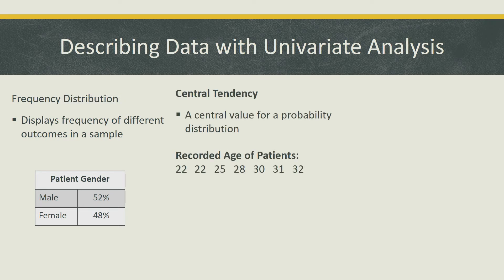Central tendency focuses on a central value for a probability distribution. Here, we see a dataset consisting of different patients and their ages. One way to determine this is to find the mean, which is the sum of all ages in the dataset, divided by the number of patients recorded.